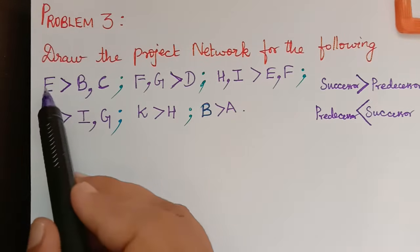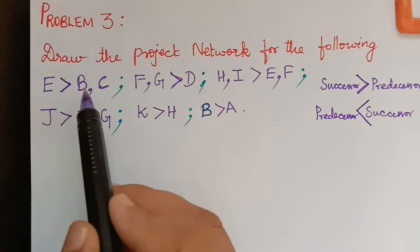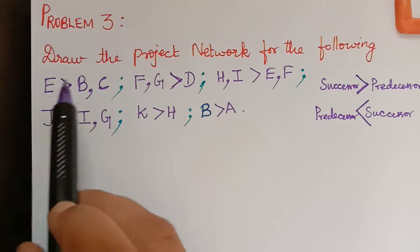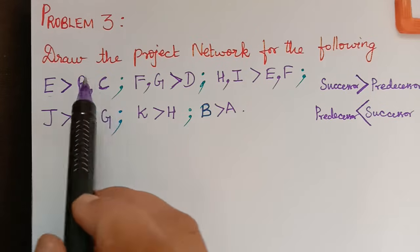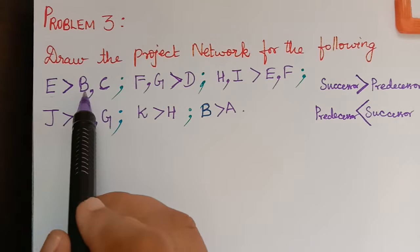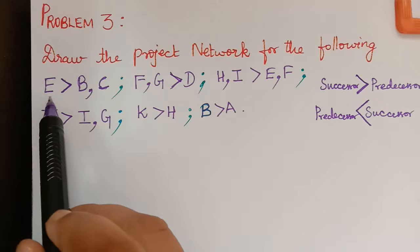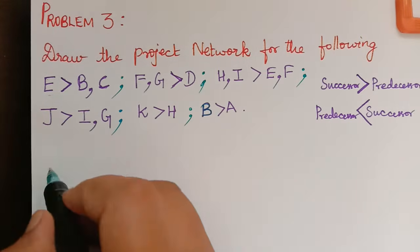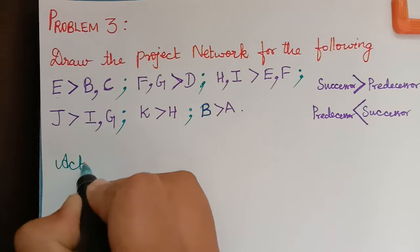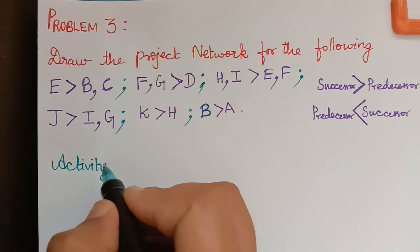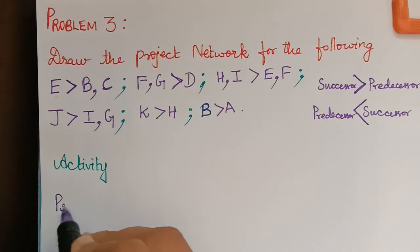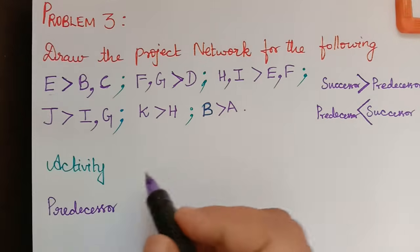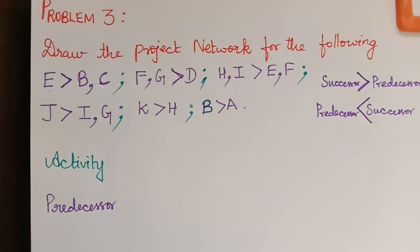For example, E greater-than B, C means E is the successor of B and C, or we can say B and C are predecessors for E. We will first write out each activity and its predecessor so that we can draw the network diagram more easily.